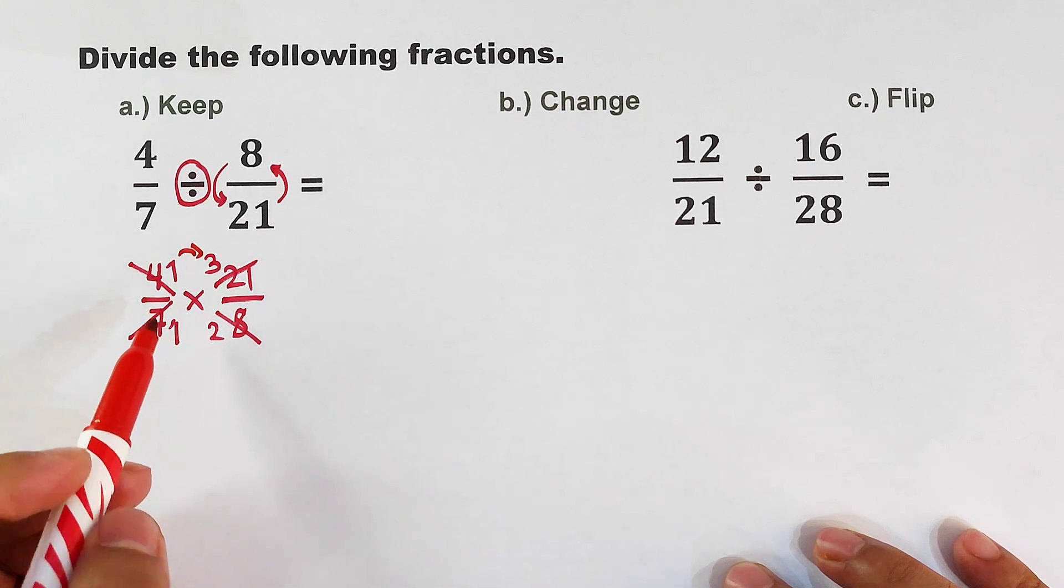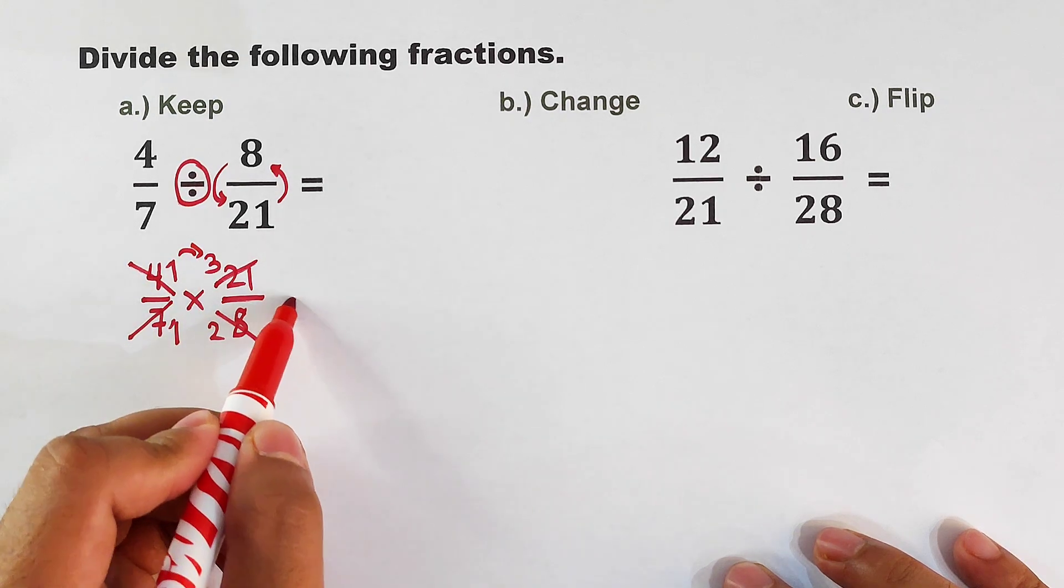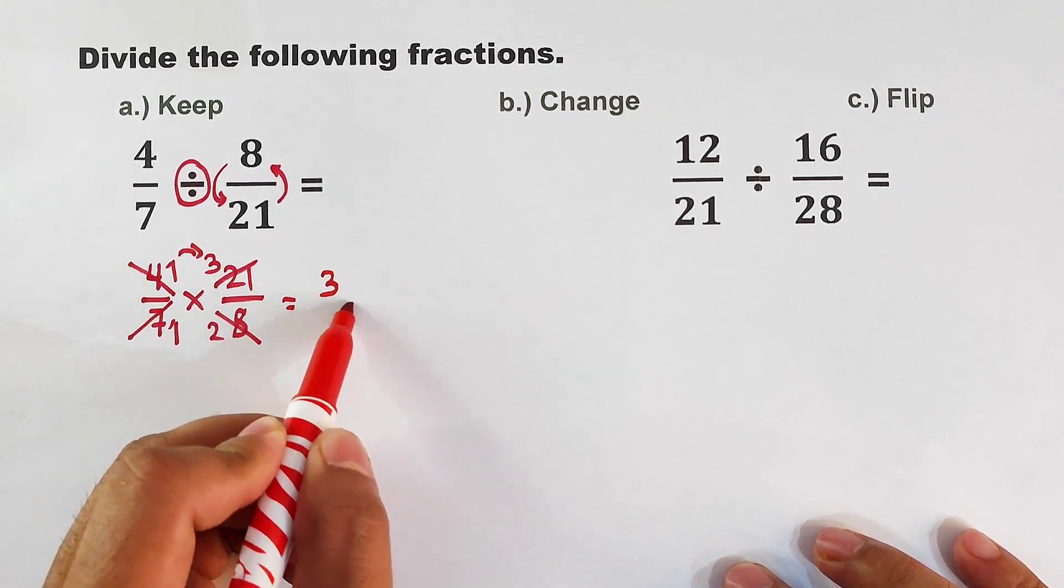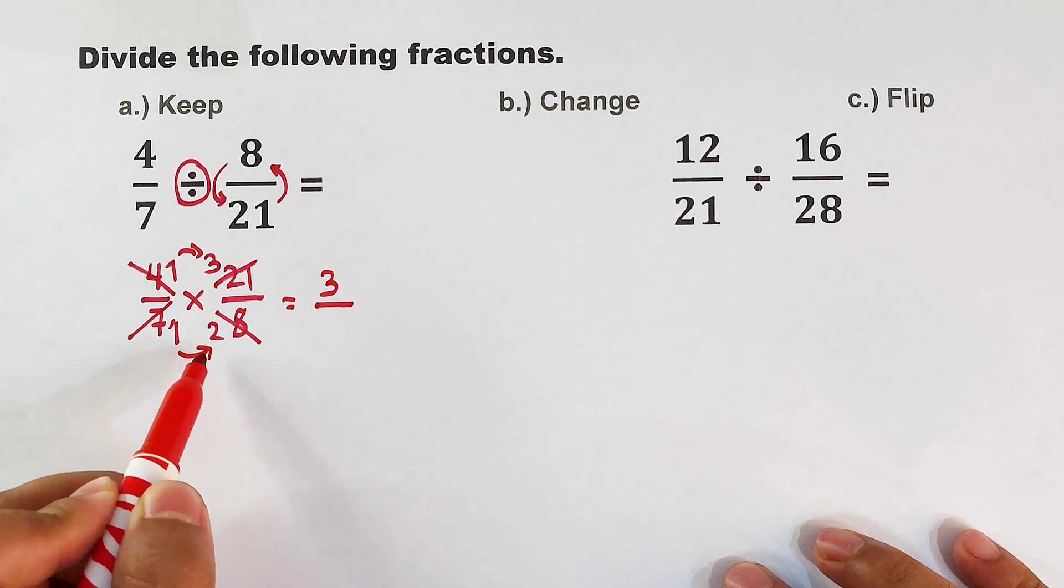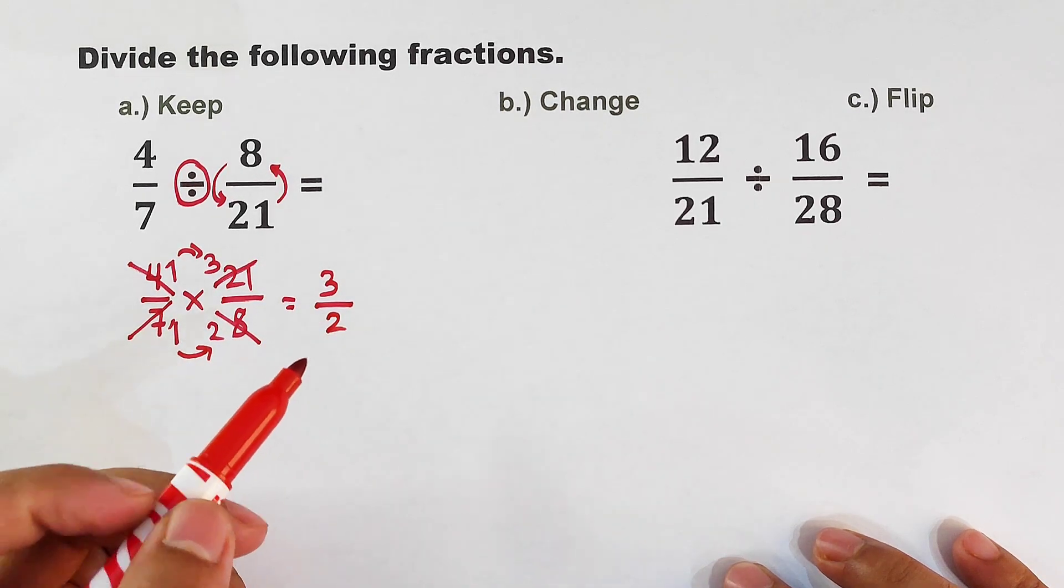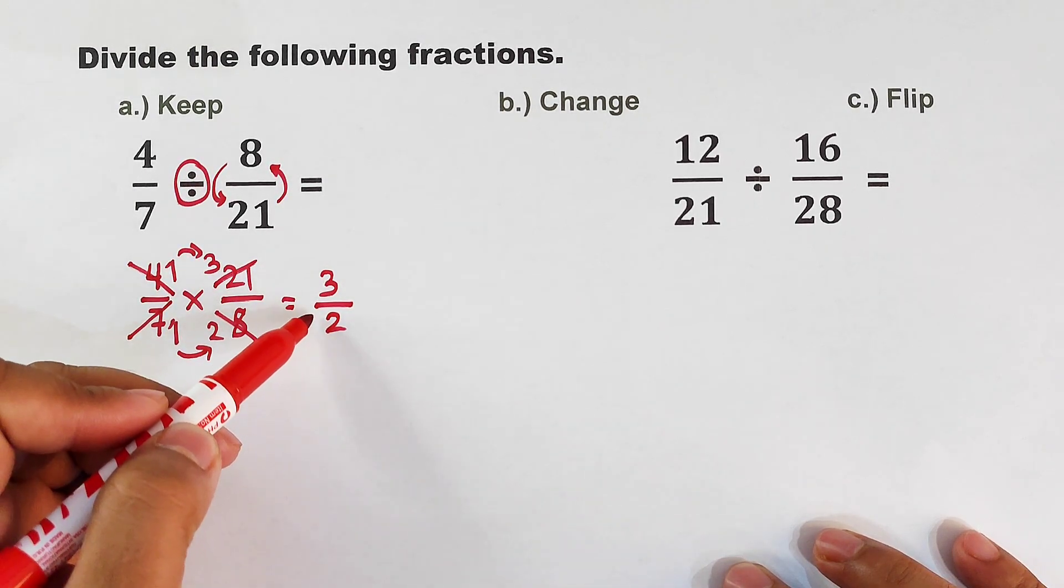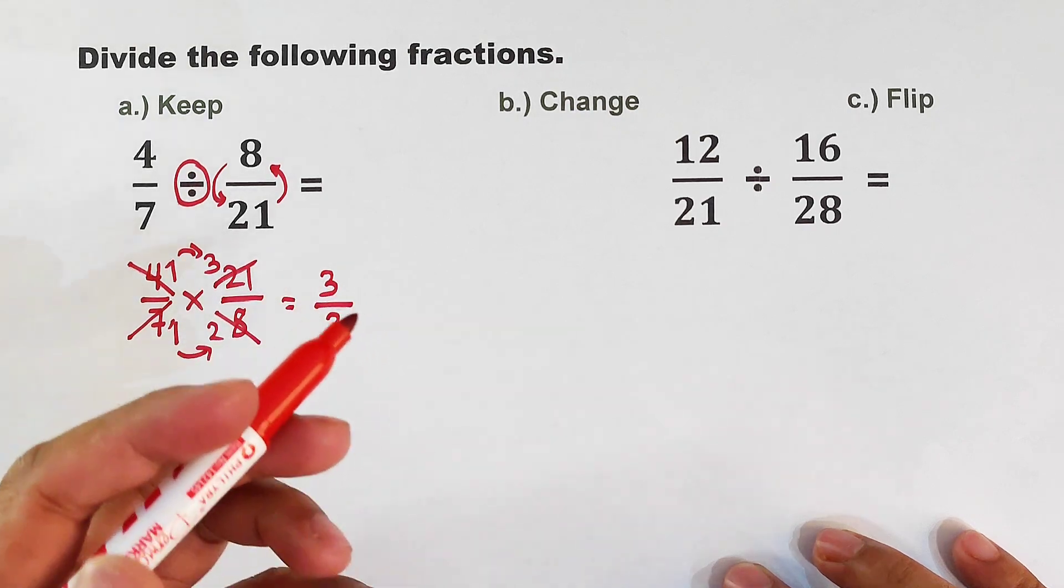Now we can multiply the remaining numbers. We have 1 times 3, that would be equal to 3 over 1 times 2, which is equal to 2. And as you can see, our final answer here is 3 over 2. It's already in simplified form.